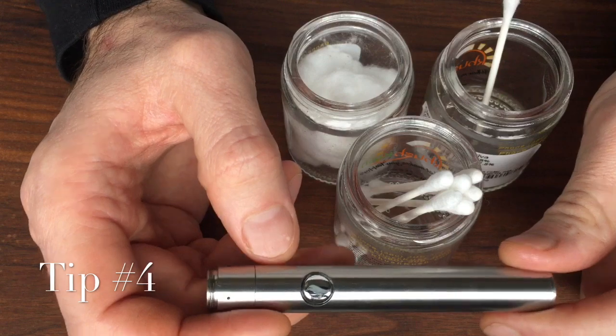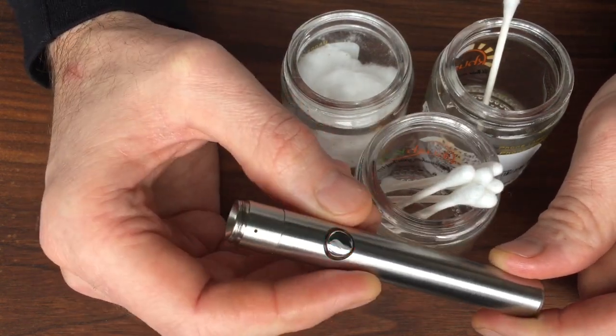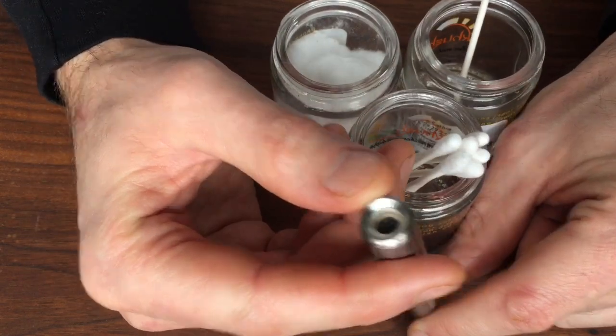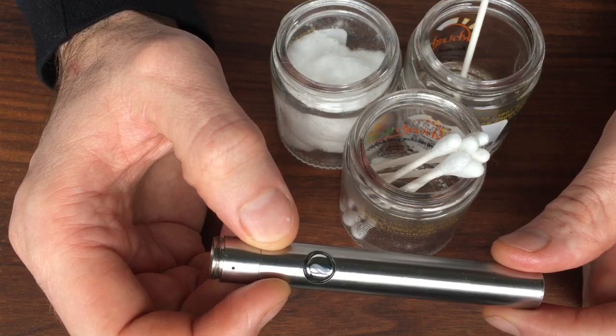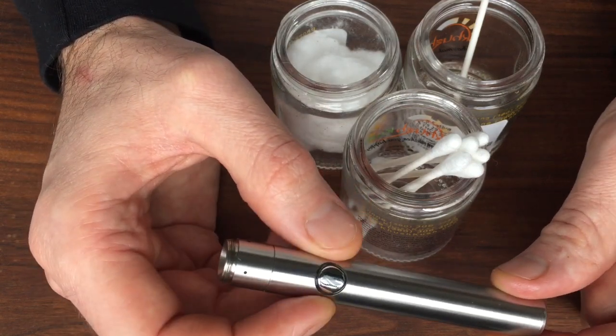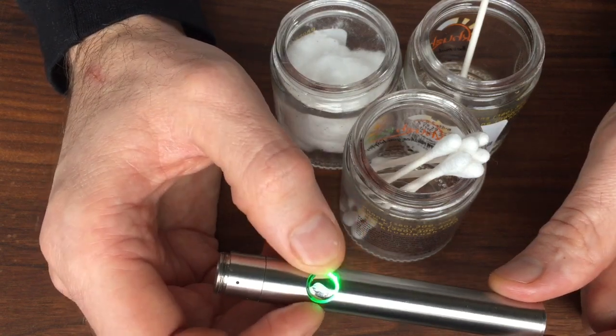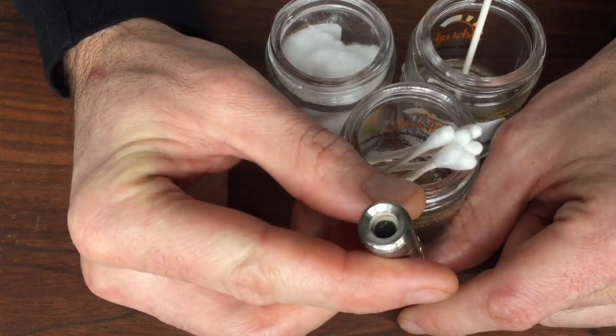Tip number four is the temperature and how you use it. If you have it on red all the time, it's going to burn it up real quick. In fact, the red setting is mainly for cleaning. You should really only have it on the blue or the green. The green is plenty strong enough.